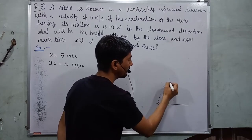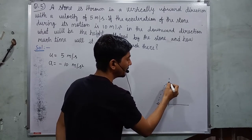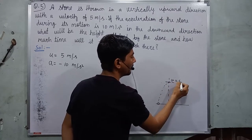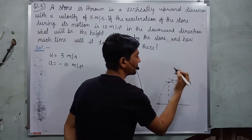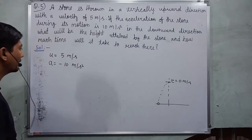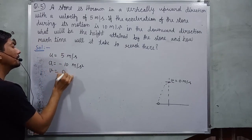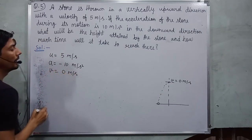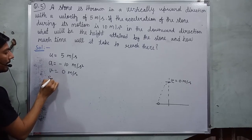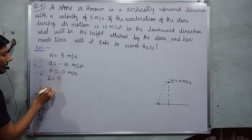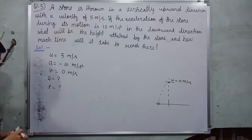After reaching final height, it will return back. So at this stage, final velocity V will be 0. So here, V is also given 0 meter per second. And now, we find the height which is distance and time.